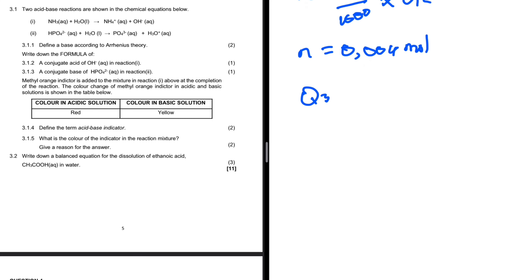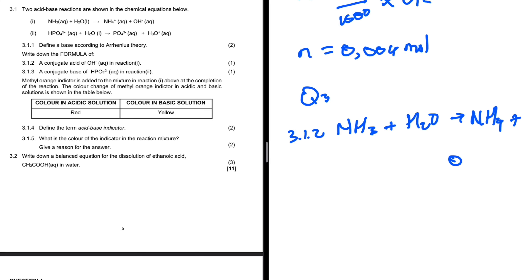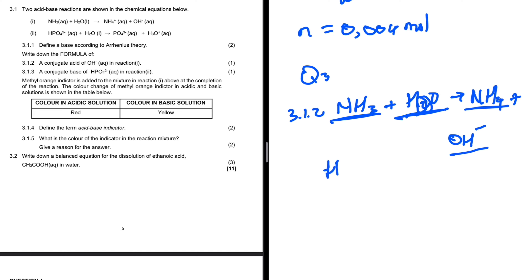Question 3.1.1 says define a base according to Arrhenius theory. A base is a substance that produces hydroxide ions when dissolved in water. Question 3.1.2 asks for the conjugate acid of OH⁻ in reaction 1. In reaction 1, water loses a proton to NH₃ to give NH₄⁺, and what remains is OH⁻. Therefore water is the conjugate acid of OH⁻, so our answer is H₂O.